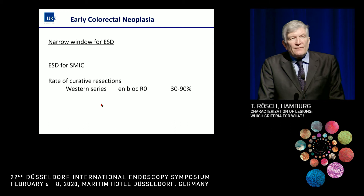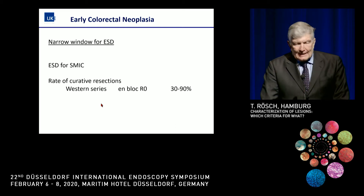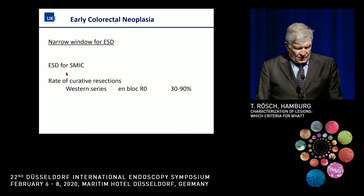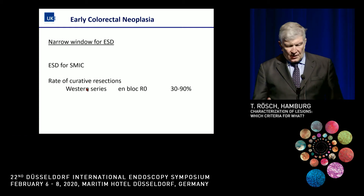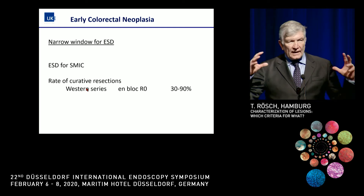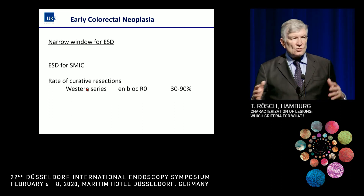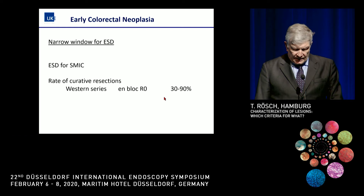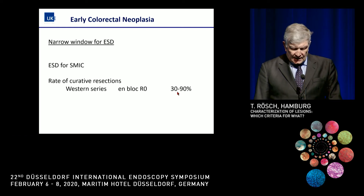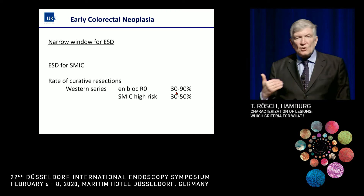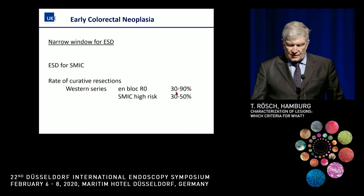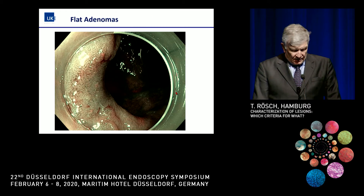We also have to bear in mind that the rate of curative resections is rather narrow. En bloc resection for colorectal lesions — usually lumped together — is greatly variable: it can be 90%, but as low as 30%. The subgroup where ESD is a curative treatment is also variable, so the window gets narrower and narrower.